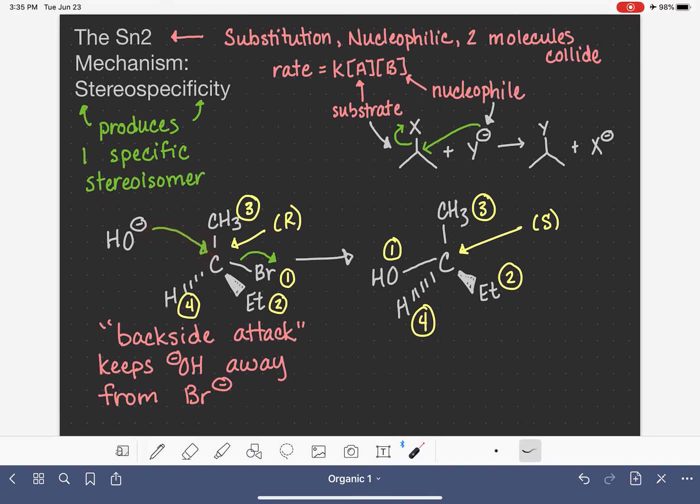The nucleophile coming in from the opposite side of the leaving group causes the existing substituents to sort of be pushed to the other side of the molecule and for the stereochemistry to invert. This is a really important concept for SN2 with chiral carbons. Stereochemistry is 100% inverted or reversed, meaning that if you start with an R molecule, 100% of your product will be S. If you start with an S molecule, 100% of your product will be R.